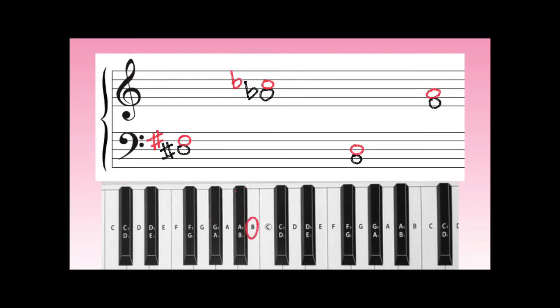Moving on — going from a B up one, two, three half-steps, we arrive on a D natural. We don't need any flats or sharps for this example because what's on the page is already a minor third. Finally, we start on an F and move up one, two, three half-steps. Is this a G-sharp or an A-flat? This is why we put it on the staff first — we know it has to be some kind of A, so the correct answer is A-flat.